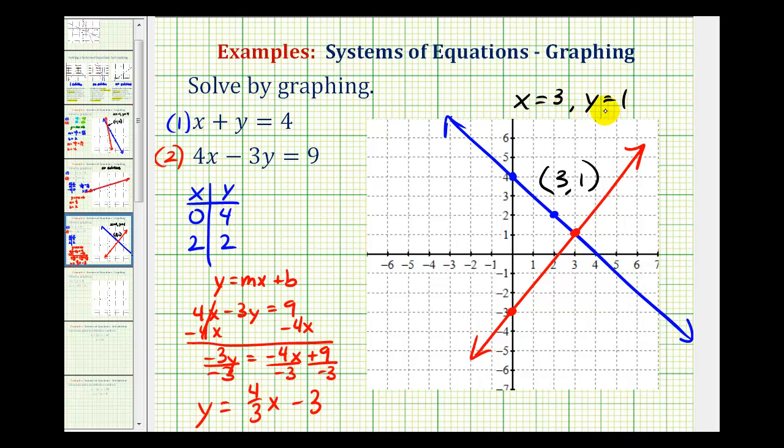If we want to check this, notice if we substitute three for x and one for y, it satisfies equation one. For equation two, we'd have four times three, that's twelve, minus three times one, or minus three. Twelve minus three equals nine.